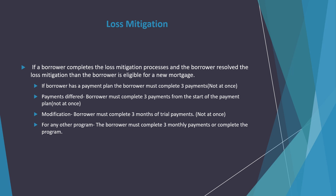If a borrower completes the loss mitigation process and resolves the loss mitigation, the borrower is eligible for a new mortgage. If a borrower has a payment plan, the borrower must complete three payments, not all at once. For payments deferred, the borrower must complete three payments from the start of the payment plan, not all at once. For a modification, the borrower must complete three months of trial payments, not all at once. For any other program, the borrower must either complete three monthly payments, not all at once, or complete the program, and then they are eligible for a new mortgage.